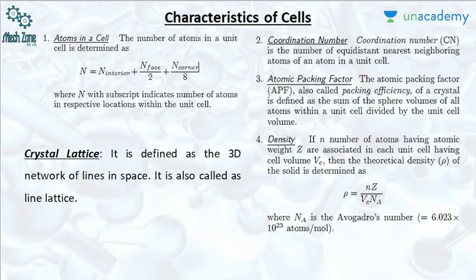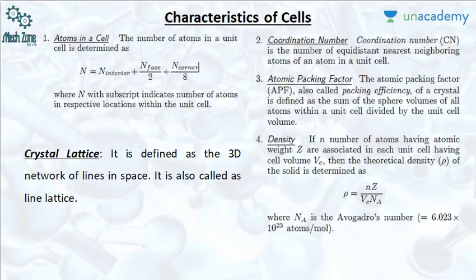We will now discuss the characteristics of unit cells. First, the number of atoms in a cell: the formula is N = N_interior + N_face/2 + N_corner/8. Second is the coordination number, which means the number of nearest neighboring atoms to any particular atom in a unit cell — that is, the atom most close to its neighboring atom. Next we have the atomic packing factor.